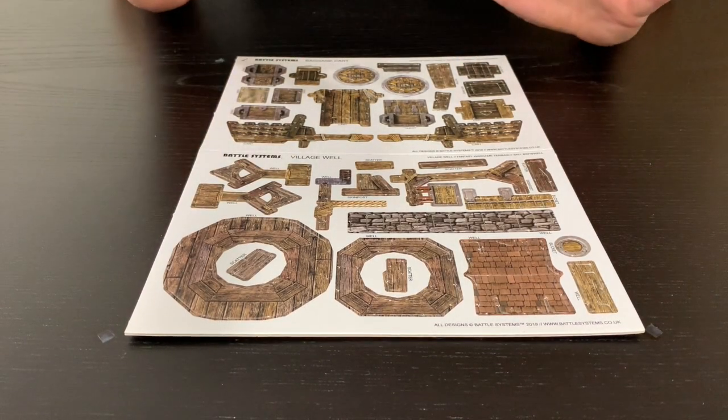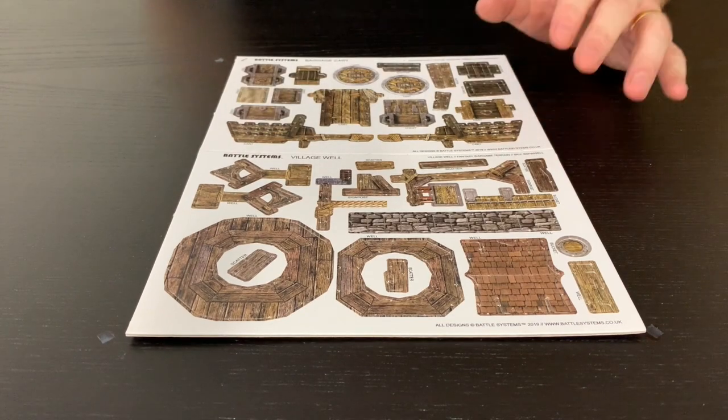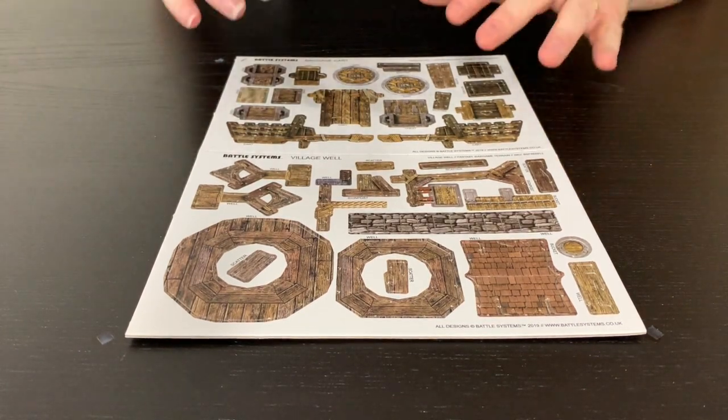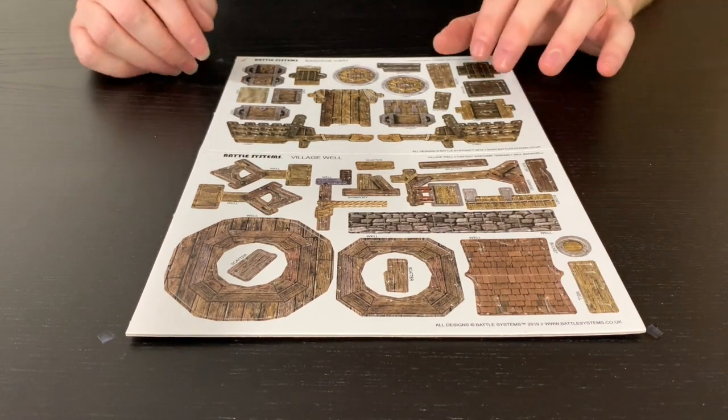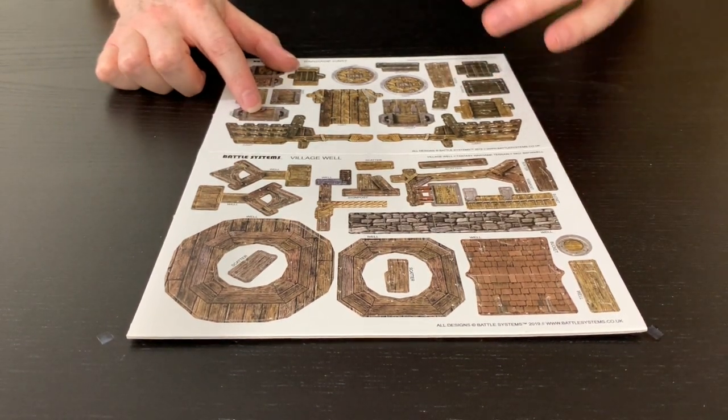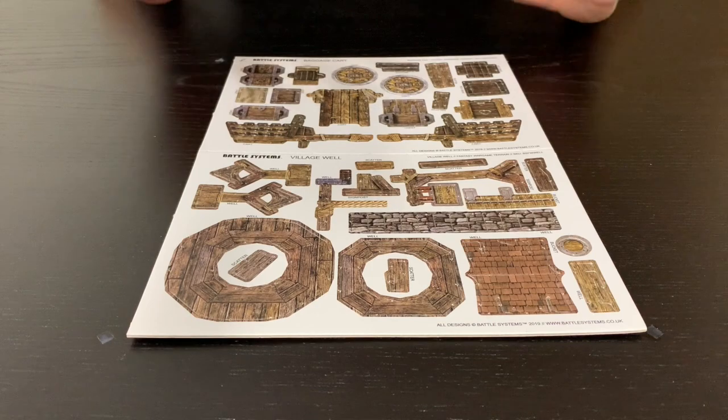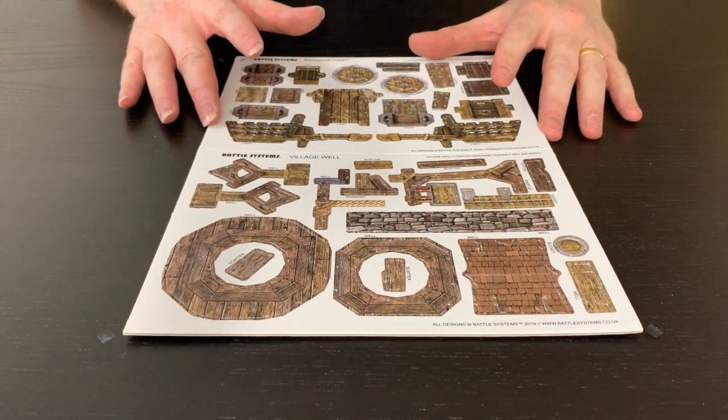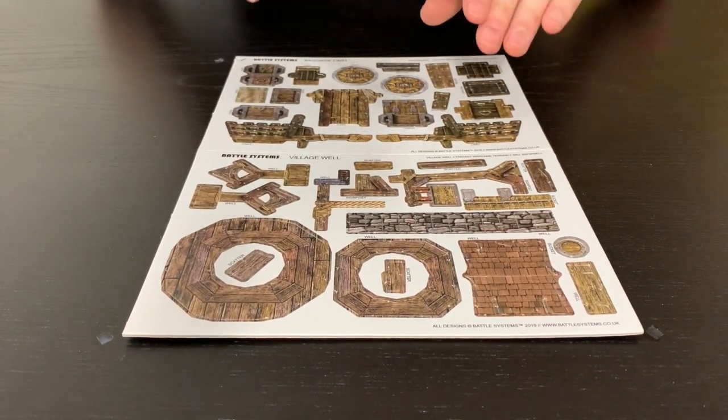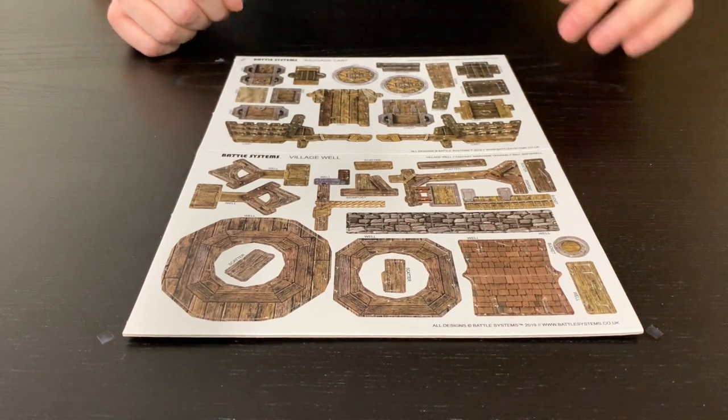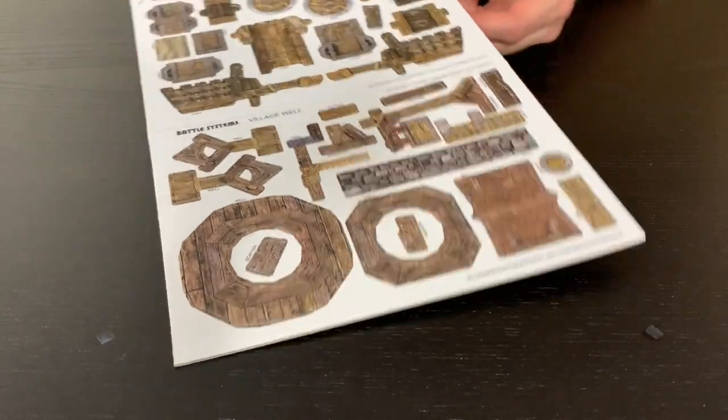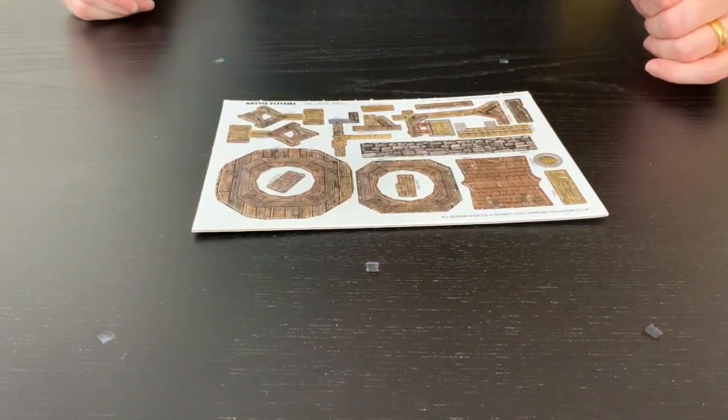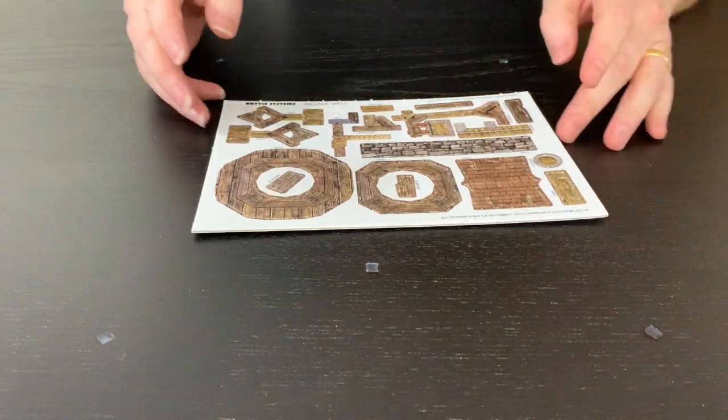Okay, so we've got the well which comes with a couple of signs, and we've also got the cart which comes with a chest and a couple of bits and pieces. Some of this stuff is covered on the dedicated scatter video, so I'm going to focus on the main items on this sheet: the well, the signs, and the baggage cart. You might have this in a village core set or as an individual sheet.